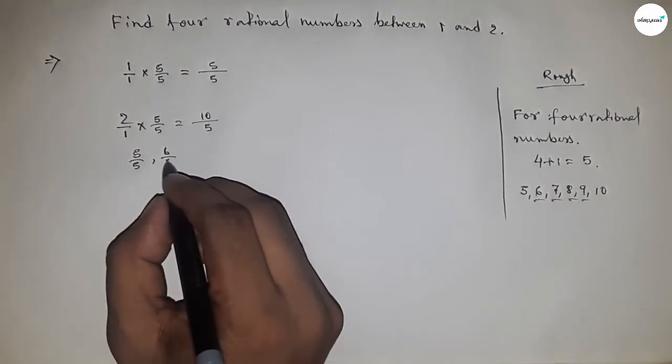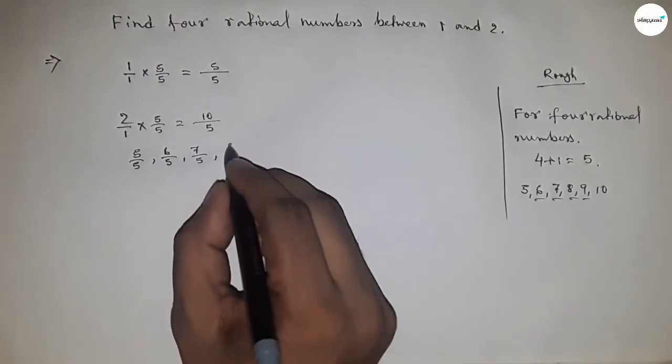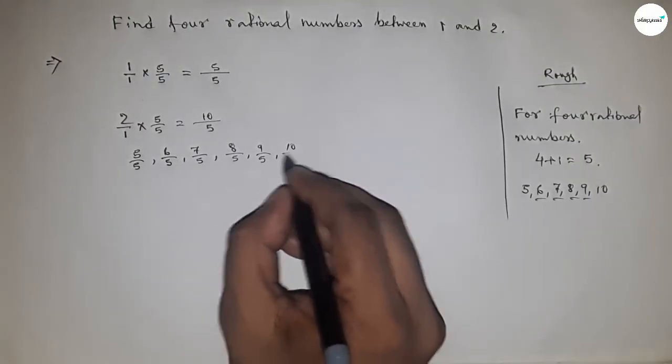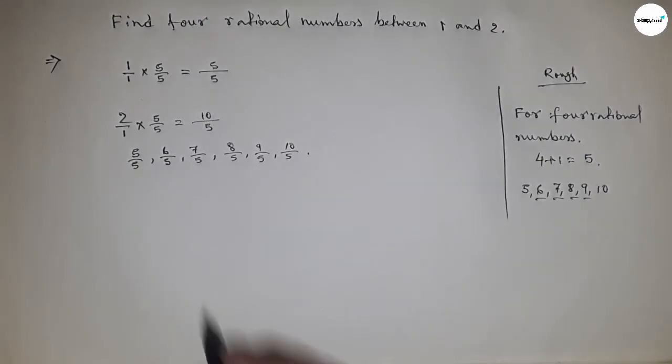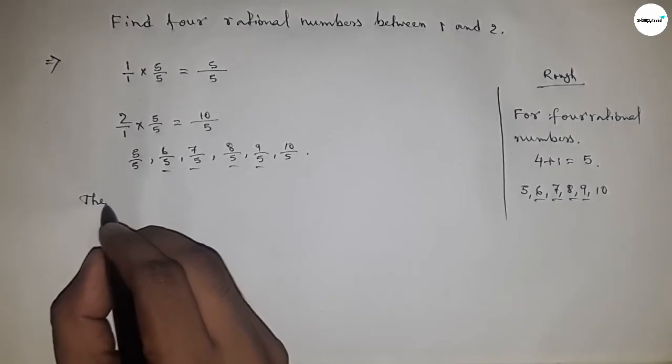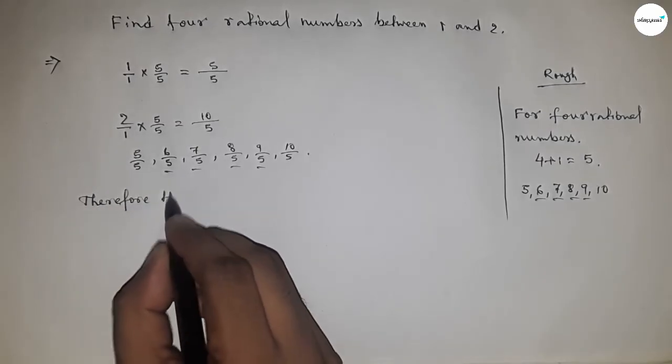By these numbers we can form four rational numbers. Therefore, the four rational numbers between one and two are: